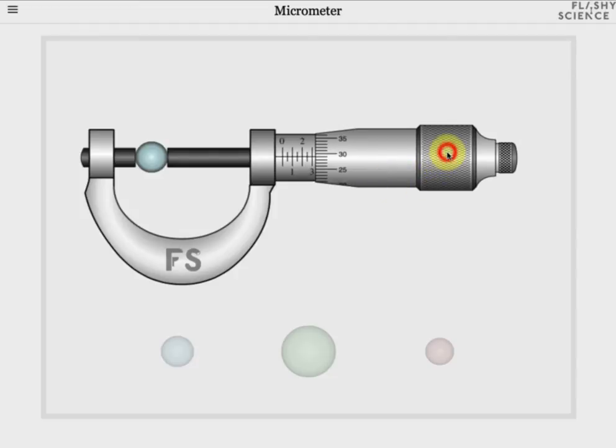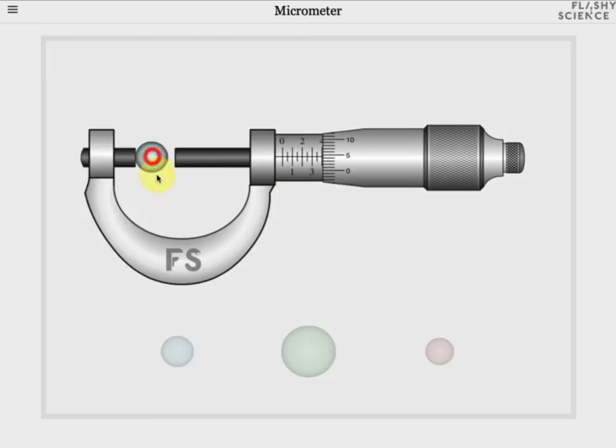To release the sample, open the micrometer again and click and drag the sample back to its original position. The other samples now become available for measurement.